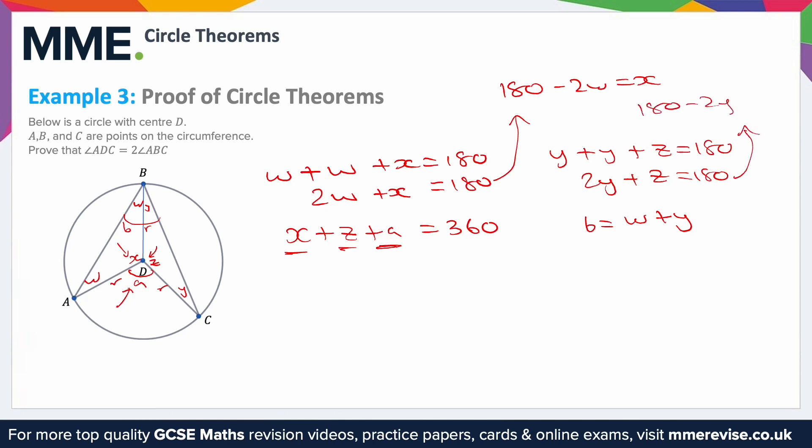I can sub those into this equation. So x is 180 take away 2w, plus z, but z is now 180 take away 2y, and then plus a. And we know that equals 360.